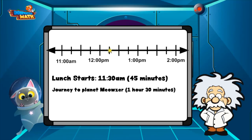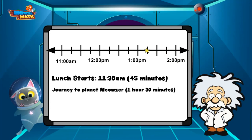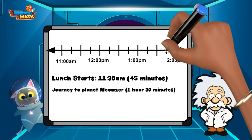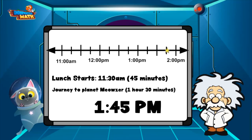Did you notice the AM change to PM as we cross the 12? Next, we need to make another hour and 30-minute jump. One hour from 12:15 is 1:15, and 30 minutes from 1:15 is 1:45 PM.